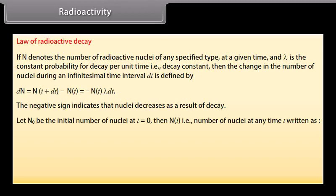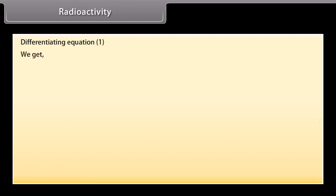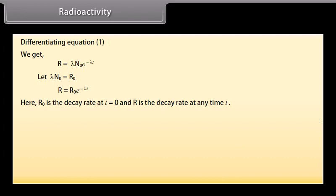Let N₀ be the initial number of nuclei at t = 0. Then N(t), the number of nuclei at any time t, is written as N(t) = N₀ × e^(−λt). Let R be the decay rate, defined as R = −dN/dt. Differentiating, we get R = λN₀e^(−λt). Let λN₀ = R₀; then R = R₀e^(−λt), where R₀ is the decay rate at t = 0 and R is the decay rate at any time t.